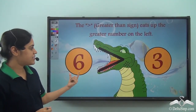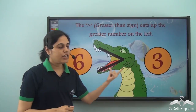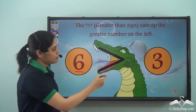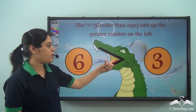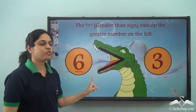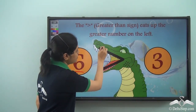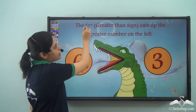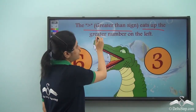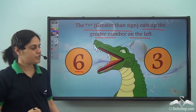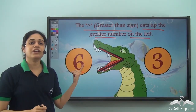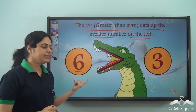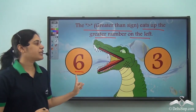So in this case we have six and three. Between six and three, six is the bigger number. So the evil alligator will open his mouth towards six. We see that his mouth is open towards six, and this symbol is the greater than symbol. The greater than sign eats up the greater number on the left. So when we have a bigger number on the left, we use the greater than sign.